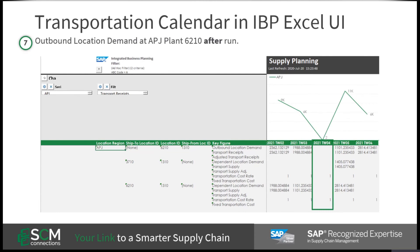As you can see, the outbound location demand in weeks 02 and 03 have jumped significantly due to the calendar adjustments. This functionality gives the planner increased flexibility and allows them to update calendars weeks or even months in advance as changes or problems arise.